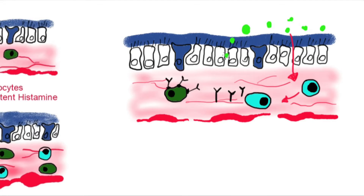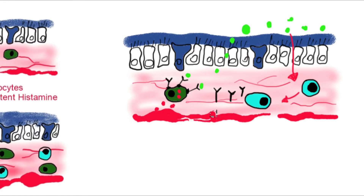Then, the video about asthma explained the immunological mechanism by which an air pollutant can start a cascade of events leading to inflamed and blocked smaller airways.